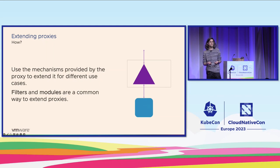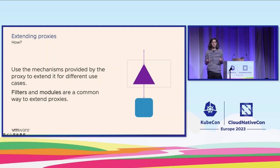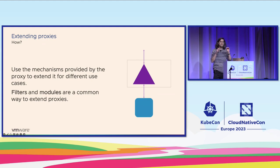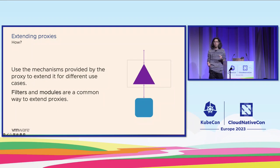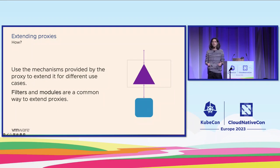Then we have filters. Filters are a much easier way to extend proxies, because they are just source code or a process that runs between the requests and the responses. Filters take requests, process them, continue with the response, receive that information, and then return it to the user.